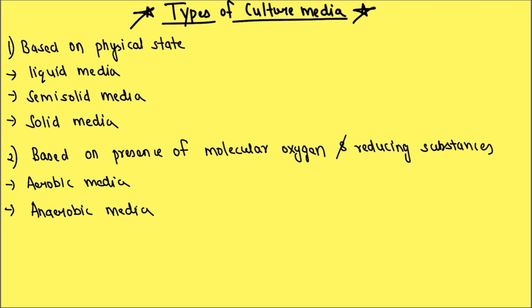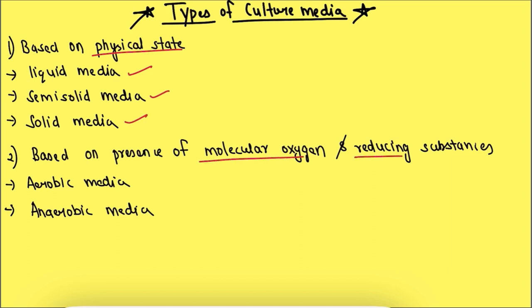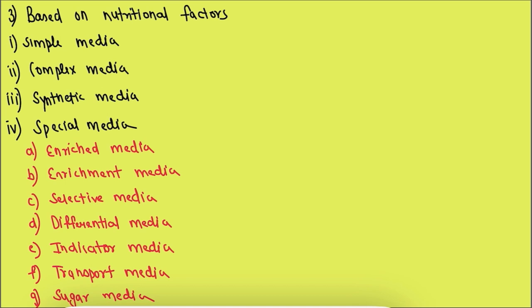The types of culture media: based on physical state, they can be classified into liquid media, semi-solid media, and solid media. Based on presence of molecular oxygen and reducing substances, they can be classified into aerobic media and anaerobic media. Based on nutritional factors, they can be classified into simple media, complex media, synthetic media, and special media. Special media is further classified into enriched media, enrichment media, selective media, differential media, indicator media, transport media, and sugar media.